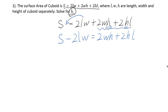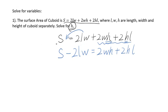We know this is a linear equation because the variable H is to the first power — not H squared, not H to the third power, but H to the first power. For linear equations, the next step is to do the factoring. H will be used as a common factor, so I will get H times the quantity 2W plus 2L.